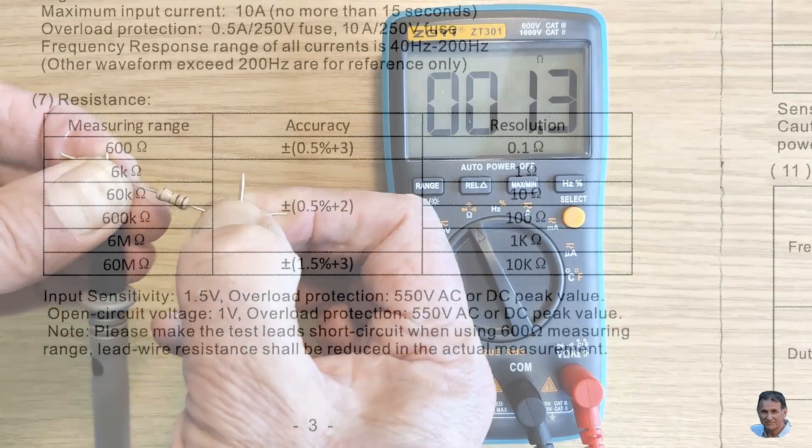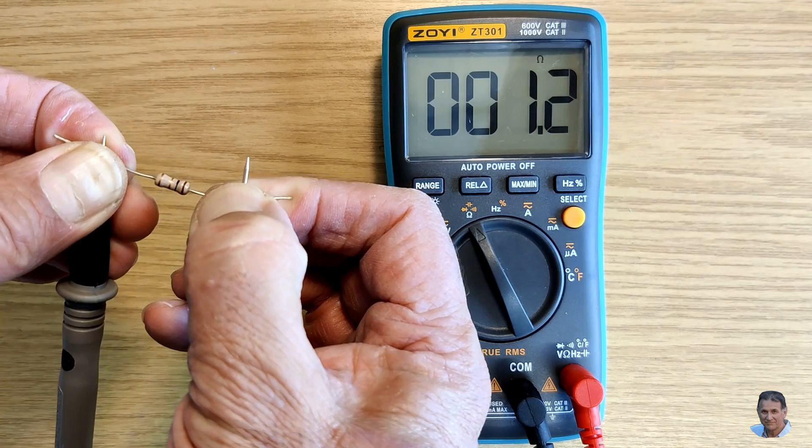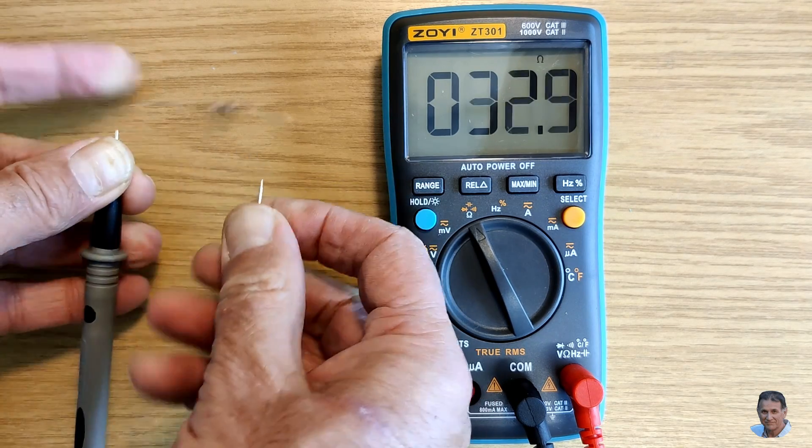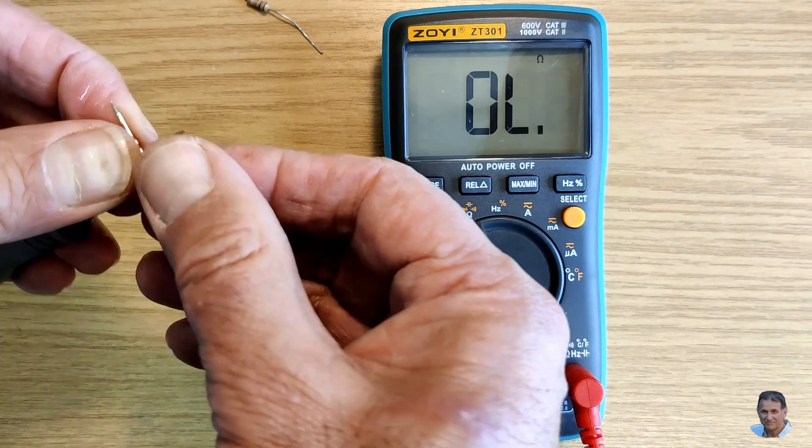And what about the test leads? When I tried to measure a one ohm resistor it reads 1.1 ohms and shorting the leads shows the extra tenth of an ohm was due to the test leads.